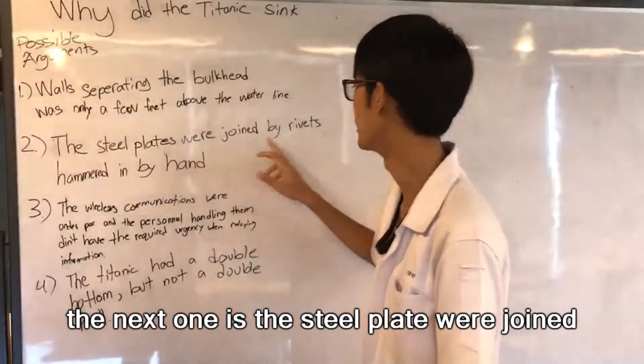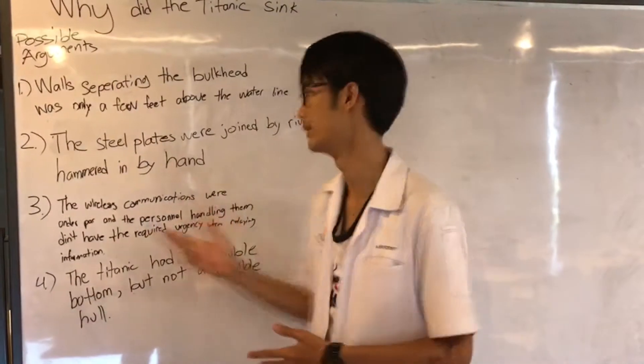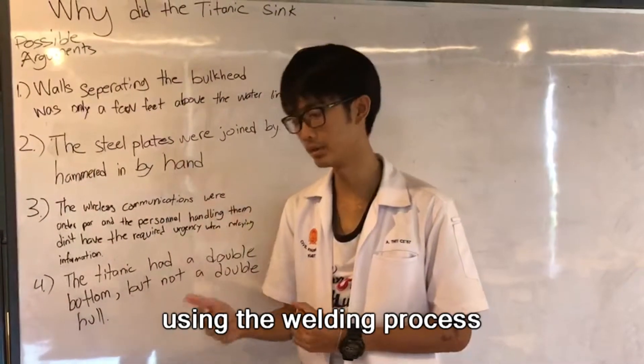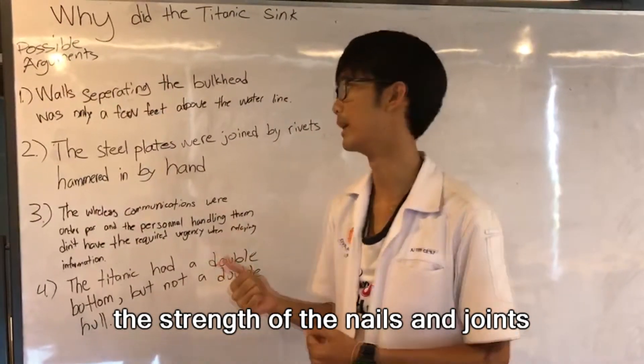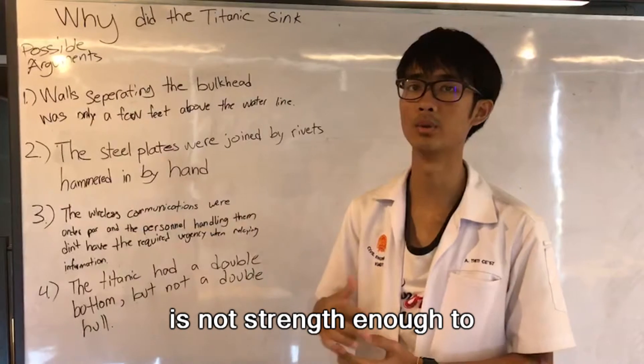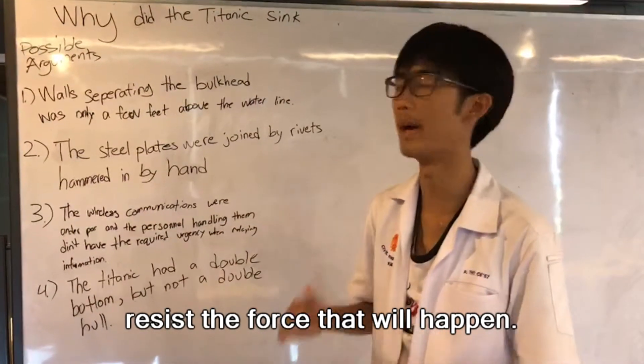The next one is the steel plate was joined by rivets hammered in by hand. They are using the riveting process to build up the ship. So the strength of the rivets and joints is not strong enough to resist the force that's going to happen.